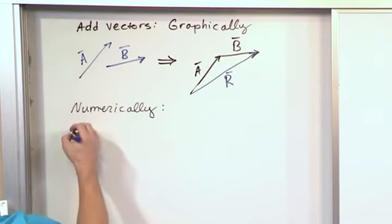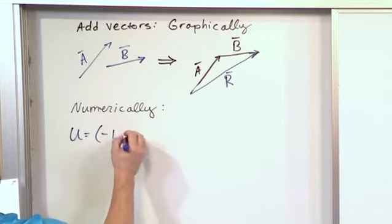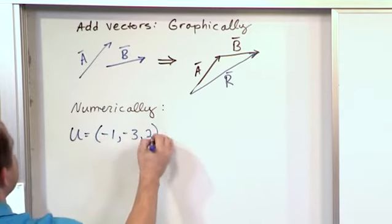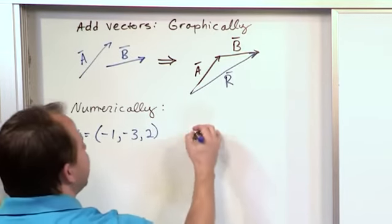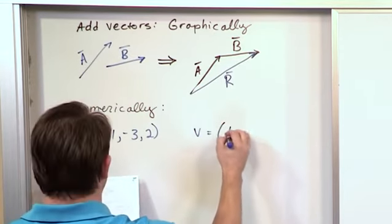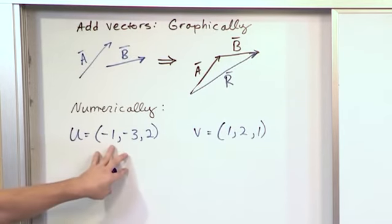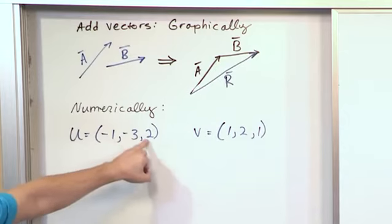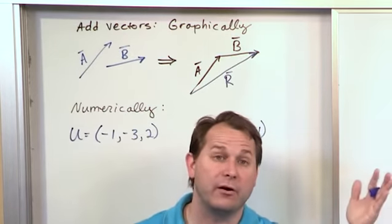And if I have a vector, I'll represent it here as these numbers: negative one, negative three, and two in this parentheses here. That's vector U. Let's say I have another vector V, which is one, two, and one. See, this is a great example. This is a vector with three components, X, Y, and Z. So if I wanted to do the graphical method, I would have to draw it or some kind of...